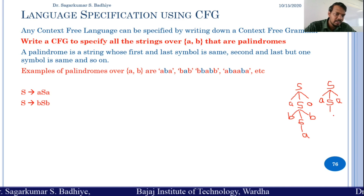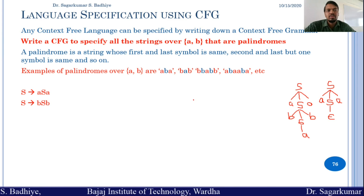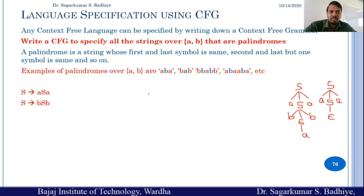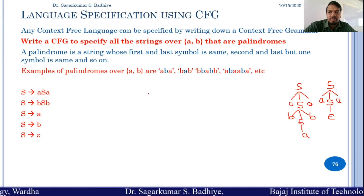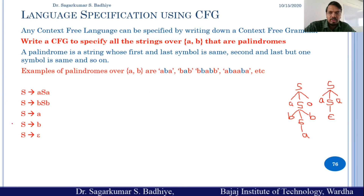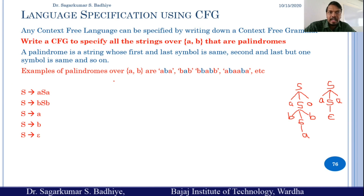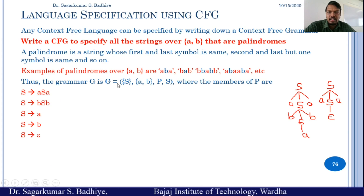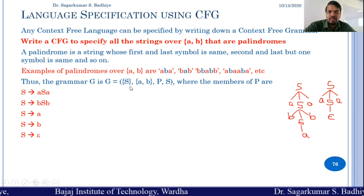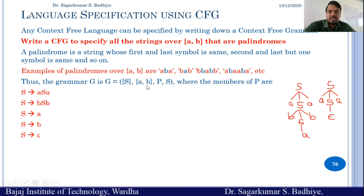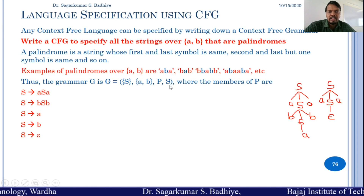You should be able to replace S with epsilon to terminate the derivation. So you need to add all these rules to the set of production rules to generate this language. The additional rules are: S derives to A, S derives to B, and S derives to epsilon. In this way you can generate all strings over A and B that are palindromes. The grammar G is represented as G = ({S}, {A, B}, P, S), where P is the set of production rules and S is the start symbol.